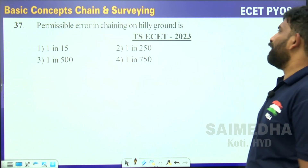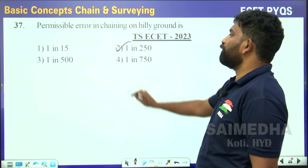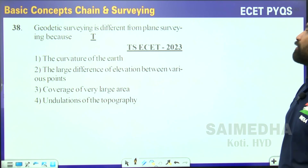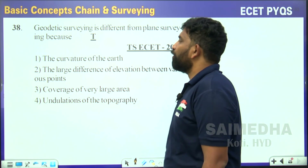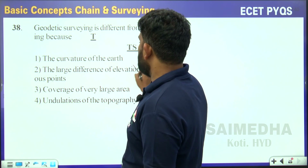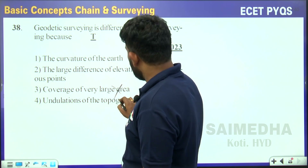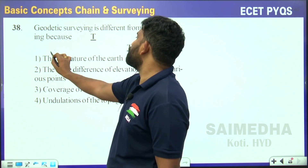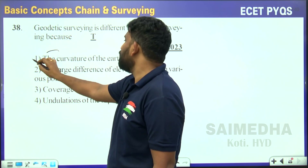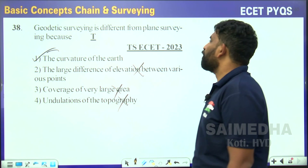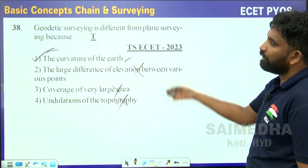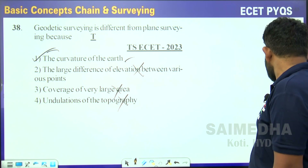The permissible error in chaining on hilly ground is 1 in 250. Geodetic surveying is different from plane surveying because in geodetic surveying the curvature of the earth is considered — not large differences in elevation, not very large area coverage, not undulations of topography. The only differentiating factor is the curvature of the earth's surface. So the first option is the correct answer.